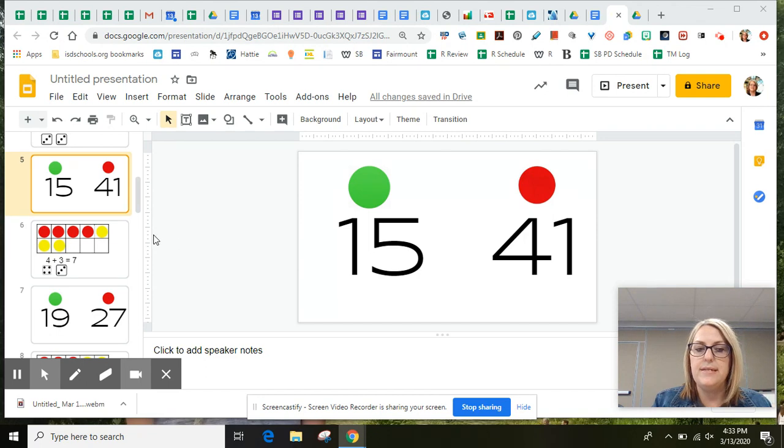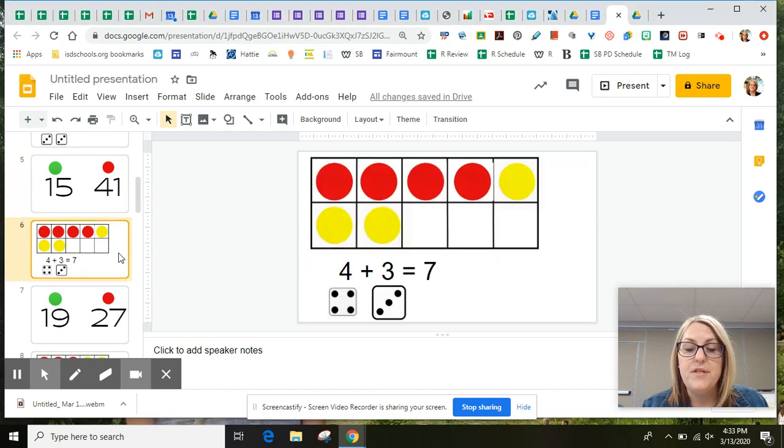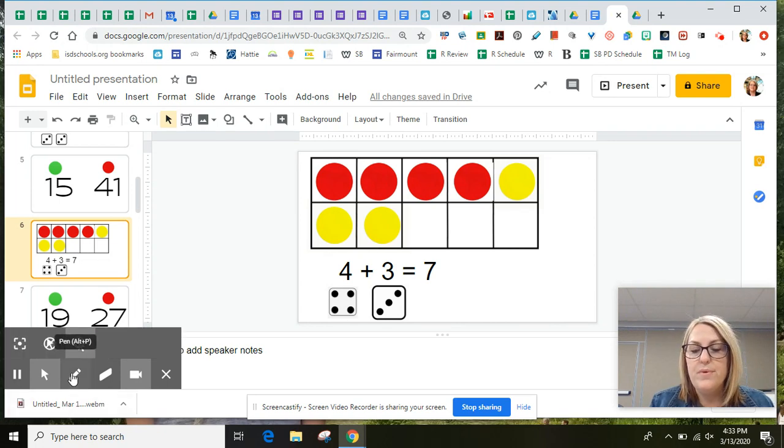Now, I want you to take a look at your screen and notice our 10 frame. Think about what you notice. How many dots do you see? How many are red? How many are yellow? Did you notice that there are four red and three yellow? Four and three is the same as seven.